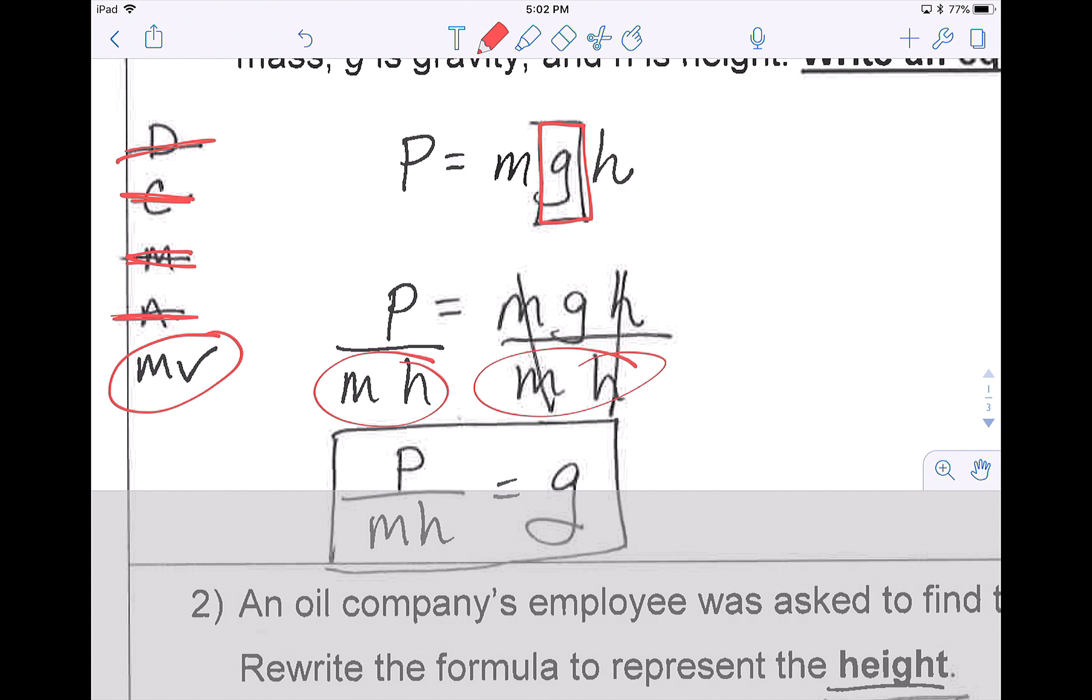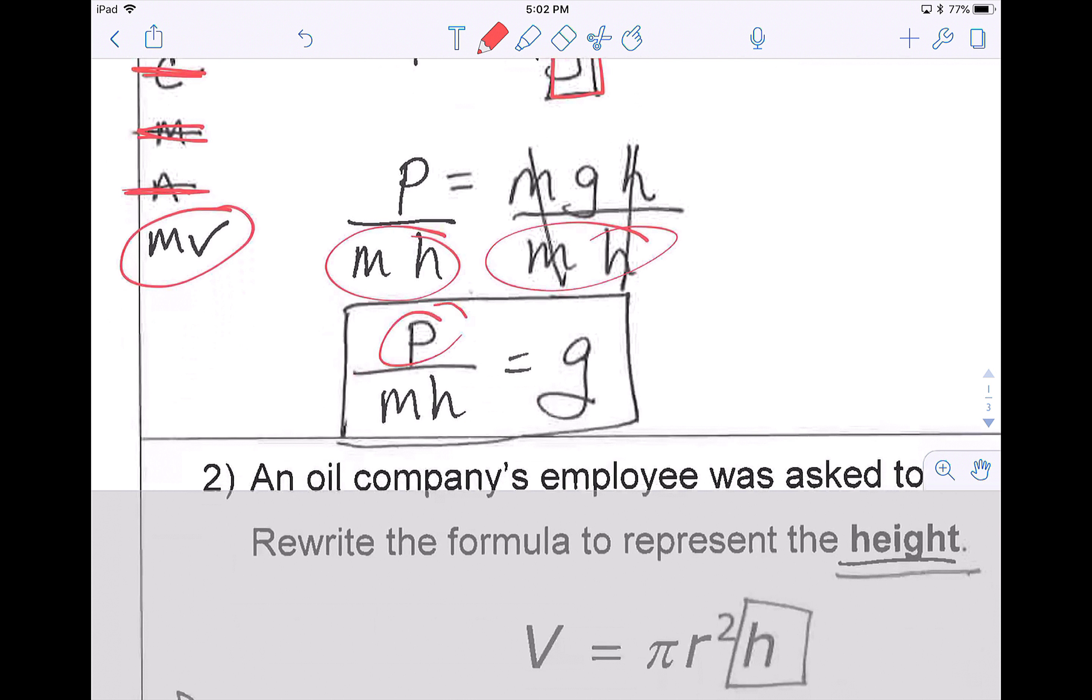On the left side, I started with p, and I'm dividing by m and h. On the right side, dividing canceled, and I'm left with just g. Now remember, like we talked about when we talked about combining like terms, you can only combine terms that match, letters that match. So p, m, and h are all separate. There's nothing else I can do here, so this is my final answer.